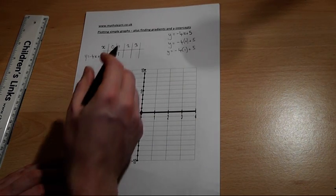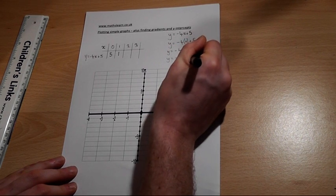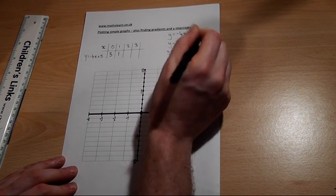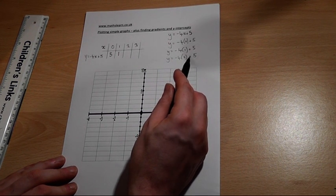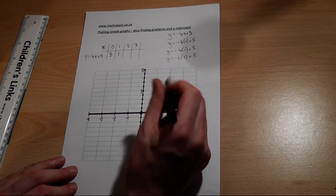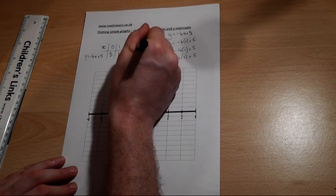And we'll do 2 as well. y equals minus 4 times 2 plus 5. Minus 4 times 2 is minus 8, plus 5 is minus 3. And if you kept on going, you'd get a minus 7 here.